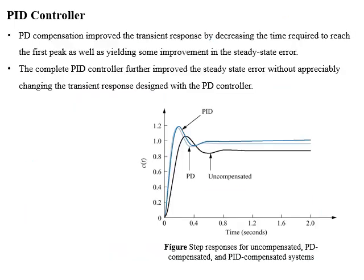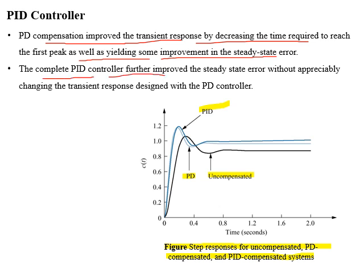Looking at the figure showing step responses for the uncompensated system, PD-compensated system, and PID-compensated system: the PD compensation improves the transient response by decreasing the time to reach the first peak and also shows some improvement in the steady-state error. The complete PID controller further improves the steady-state error without appreciably changing the transient response that was designed with the PD controller.